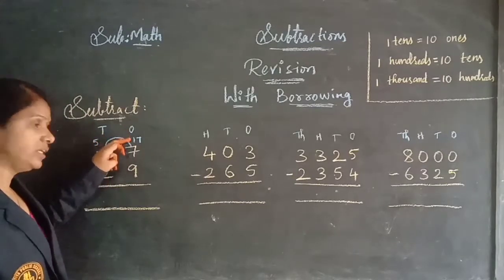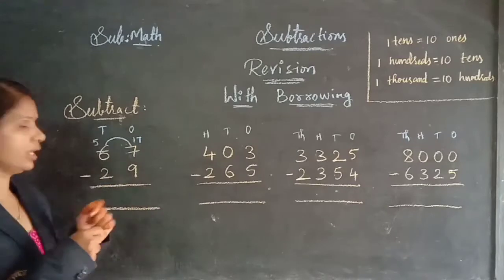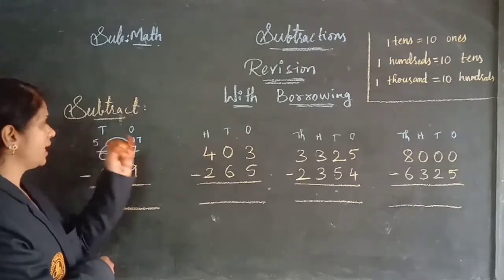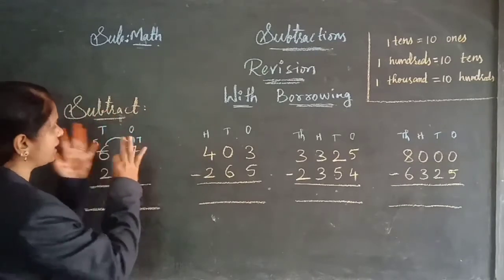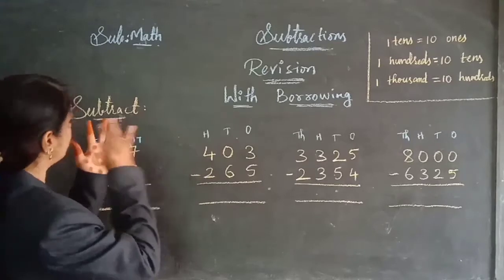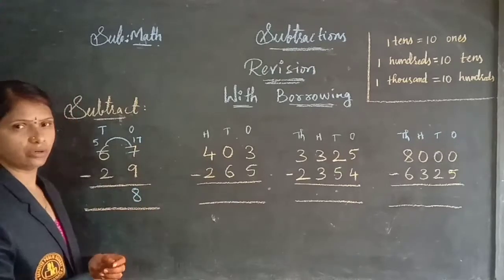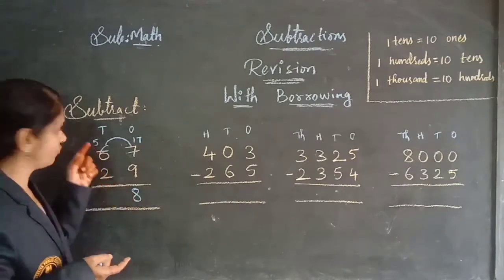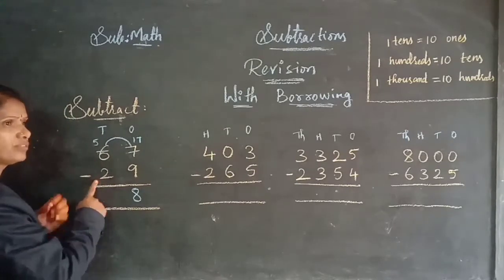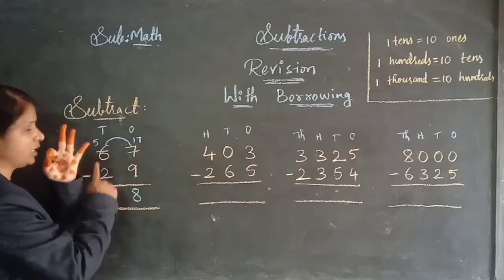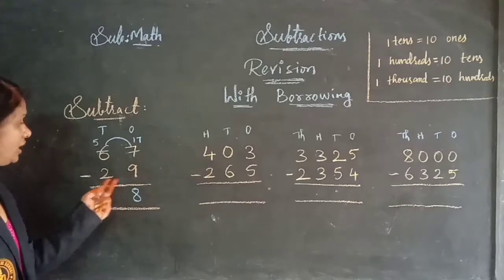Now here it is seventeen. From nine to seventeen, if I move — nine after: ten, eleven, twelve, thirteen, fourteen, fifteen, sixteen, seventeen. Eight numbers are required to reach seventeen. So I am writing eight. Now five minus two — five is bigger and two is smaller. Moving from two to five: two after three, four, five — three numbers required. So I am writing three. Sixty-seven minus twenty-eight will be thirty-nine.